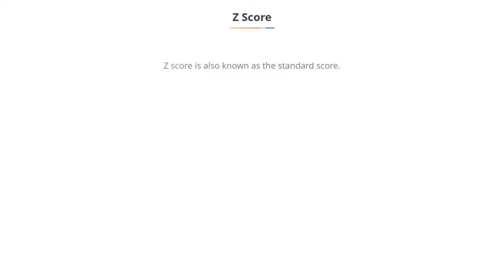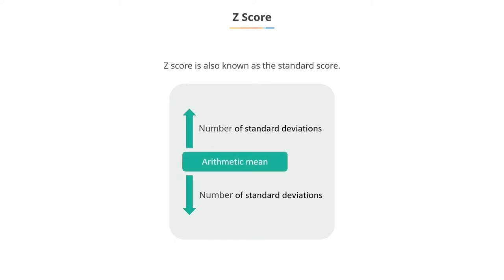A Z-score, also known as a standard score, tells you the number of standard deviations a particular data value is above or below its arithmetic mean.